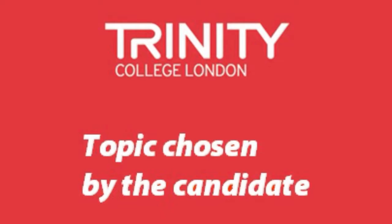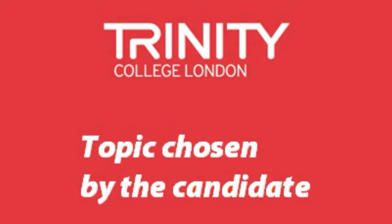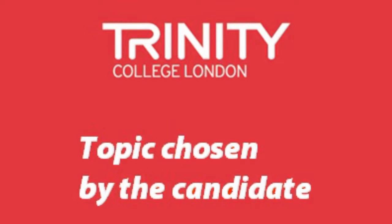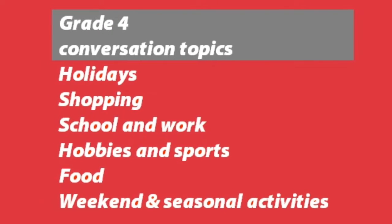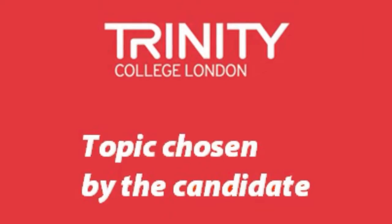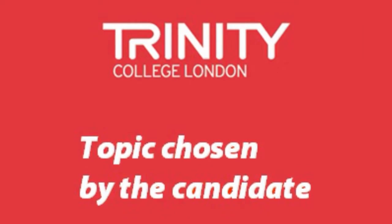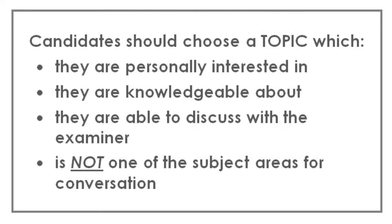That brings us to the topic selected by the student, and this is where much more preparation is required. The first thing to make clear to the students is that the topic they choose cannot be one of those on the list for the conversation phase. So, for example, at grade 4, a student cannot choose holidays or food as their topic for discussion. In choosing a topic, students should think about something they are genuinely interested in and which they feel confident talking about. Teenagers and young adults will need guidance in this. A student might choose football as their topic, but when asked about it in more detail, we'll probably find that they can't say anything very meaningful on the subject beyond naming their favourite team and players.